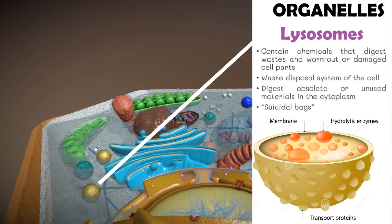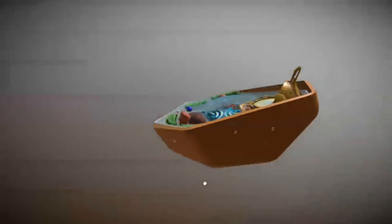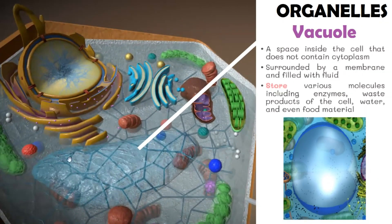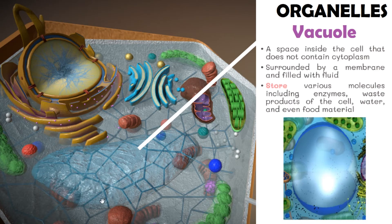Lastly, we have the vacuole. A vacuole may be described as a space inside the cell that does not contain cytoplasm. It is surrounded by a membrane and filled with fluid. Vacuoles store various molecules including enzymes, waste products of the cell, water, and even food materials, depending on the type of cell.